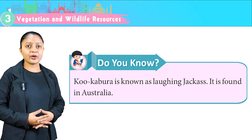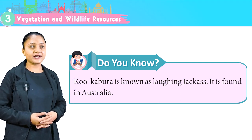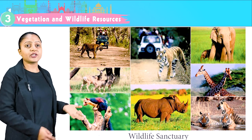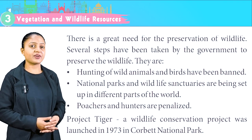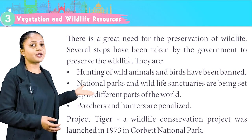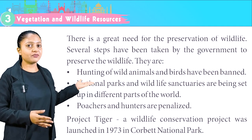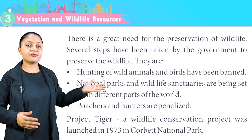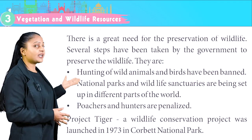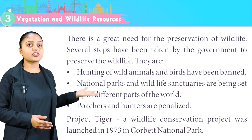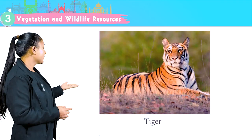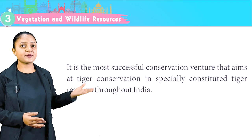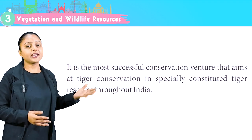Did you know — Kookaburra is known as the laughing jackass and is found in Australia. There is a great need for the preservation of wildlife. Several steps have been taken by the government: hunting of wild animals and birds has been banned; national parks and wildlife sanctuaries are being set up in different parts of the world; poachers and hunters are penalized. Project Tiger — a wildlife conservation project — was launched in 1973 in Corbett National Park. It is the most successful conservation venture, aiming at tiger conservation in specially constituted tiger reserves throughout India.